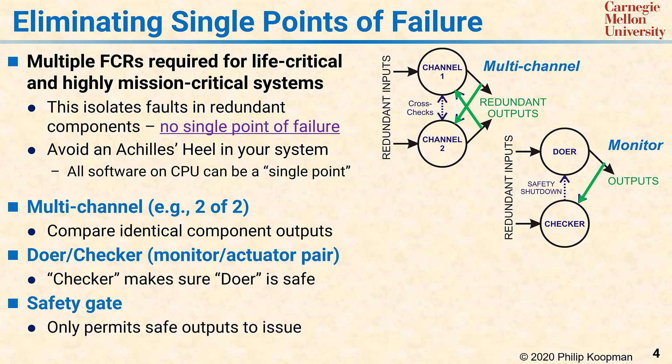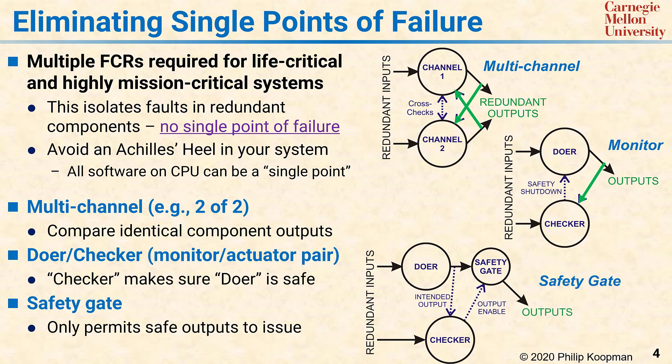The third pattern is a variant of the doer-checker pattern and is called the safety gate pattern. In this architectural pattern, a doer computes an output value and sends it to both a safety gate and a checker. The checker opens or closes the safety gate depending on whether the output looks safe. This avoids the momentary vulnerability of a plain doer-checker because unsafe outputs are never passed through the gate. However, it does come at the cost of a delay waiting for the checker to complete its check, and also the need to have a safety gate that is in itself not a single point of failure.